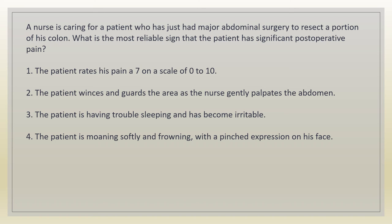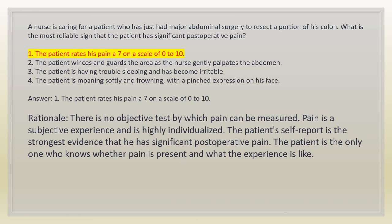A nurse is caring for a patient who has just had major abdominal surgery to resect a portion of his colon. What is the most reliable sign that the patient has significant post-operative pain? 1. The patient rates his pain as 7 on a scale of 0 to 10. 2. The patient winces and guards the area as the nurse gently palpates the abdomen. 3. The patient is having trouble sleeping and has become irritable. 4. The patient is moaning softly and frowning with a pinched expression. Answer: 1. Rationale: there is no objective test by which pain can be measured. Pain is a subjective experience and the patient's self-report is the strongest evidence of significant post-operative pain. The patient is the only one who knows whether pain is present.